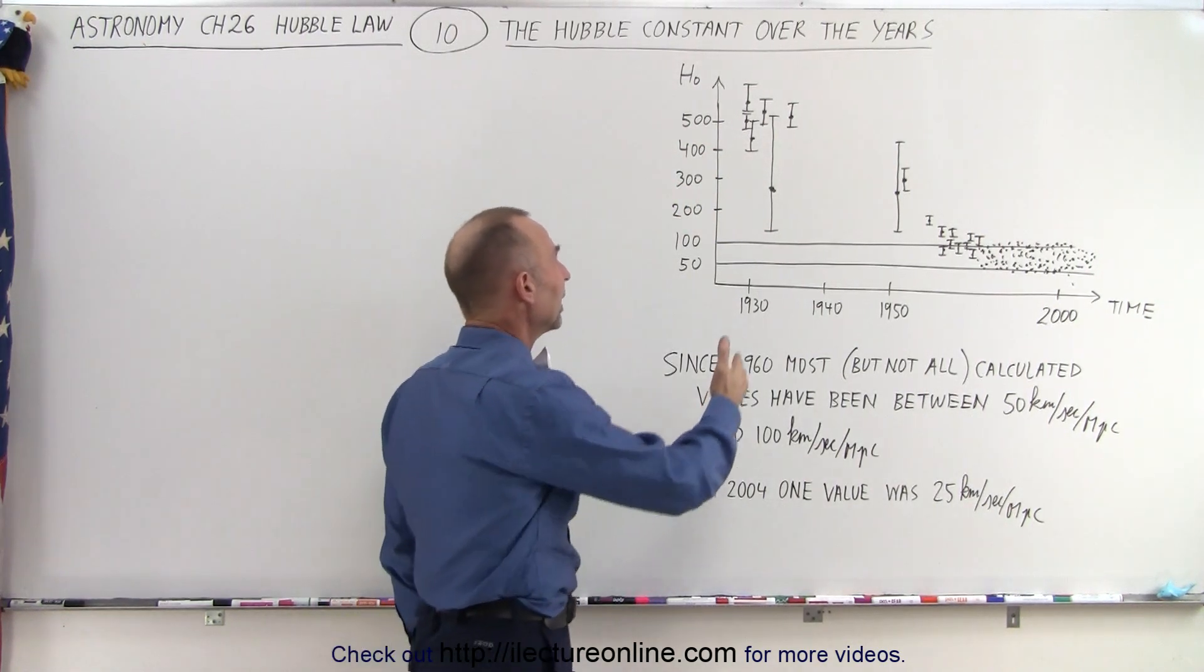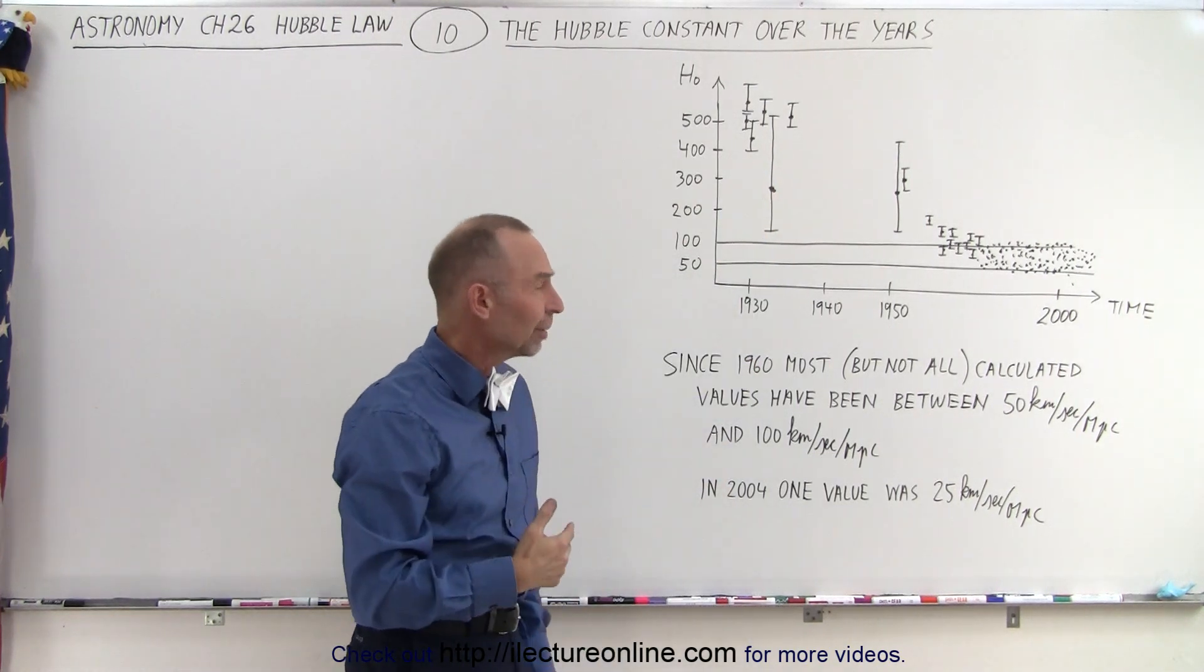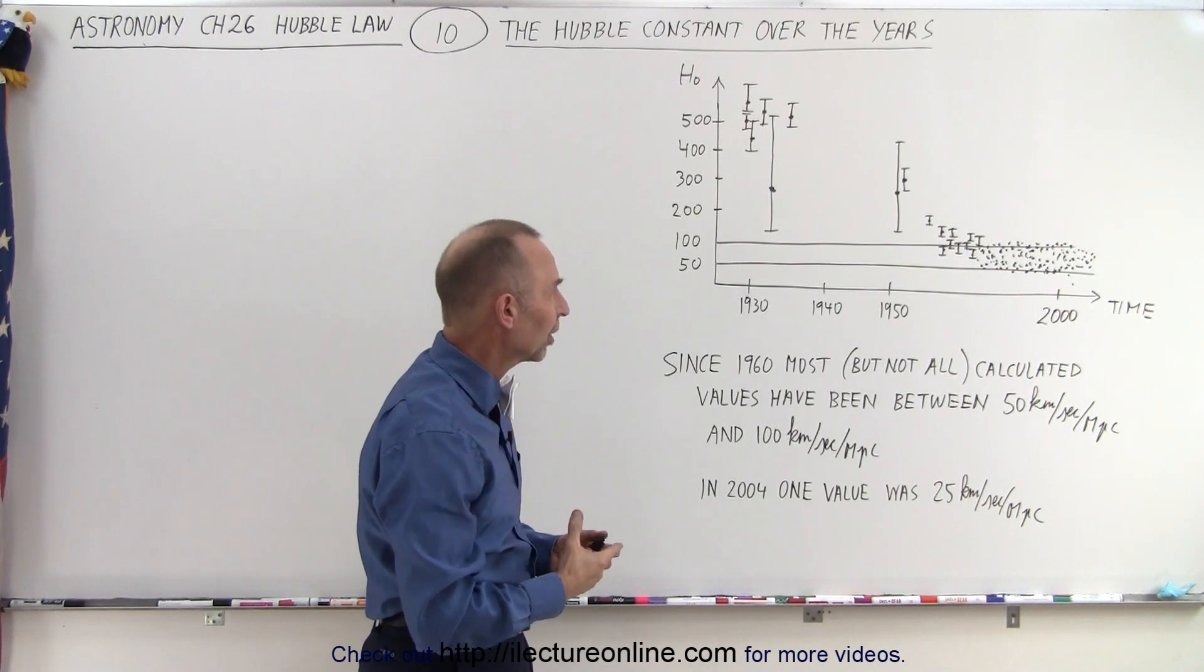Then we had one measurement in the 1930s that dropped down between 200 and 300, but then until about 1950 no improvements were made on the estimation for the Hubble constant.